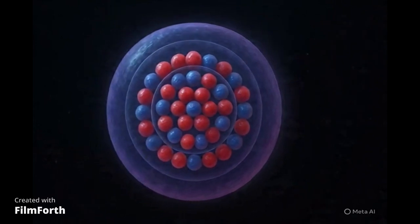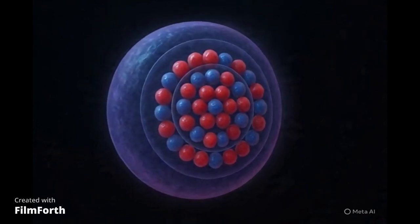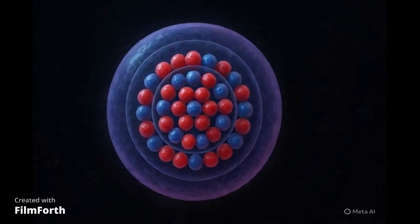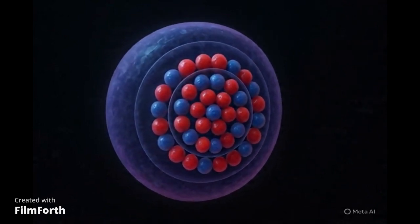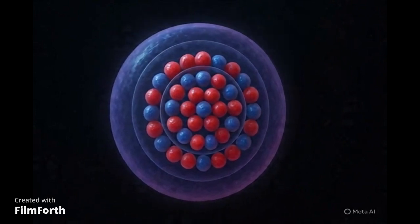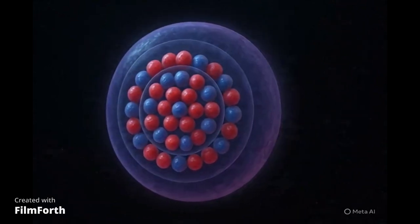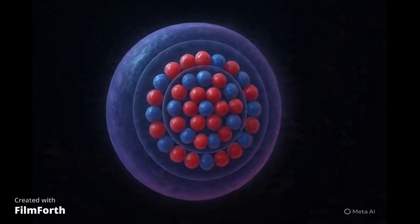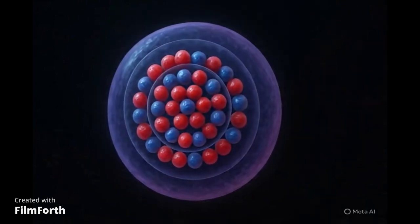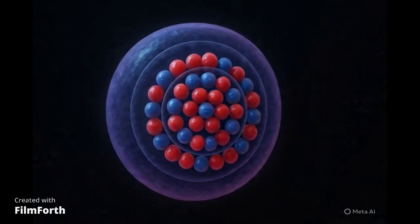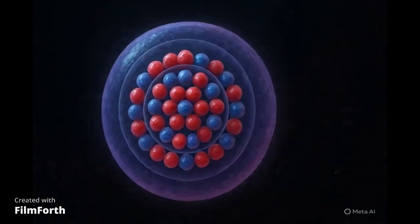Furthermore, just like electrons in an atom occupy specific energy levels, or shells, so too do the nucleons within the nucleus. The way these nuclear shells fill up and the interactions between the nucleons in these shells significantly influence the overall shape. Think of it like building with blocks. Certain arrangements are more stable and symmetrical than others.